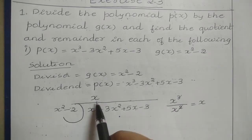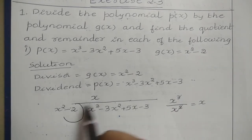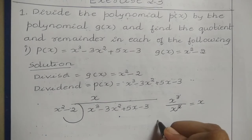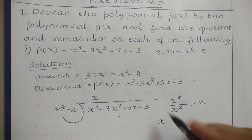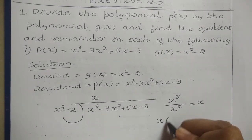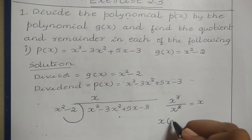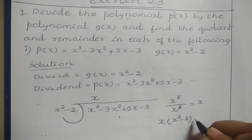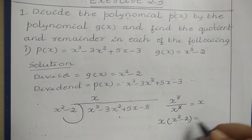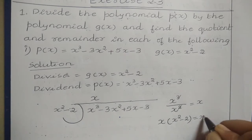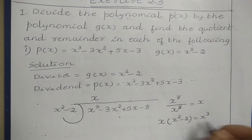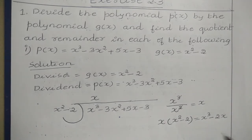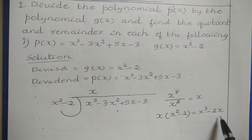After getting the first term of the quotient, multiply this value by the divisor. The first term of the quotient is X, so X multiplied by the divisor X squared minus 2 gives: X times X squared equals X cubed, and X times minus 2 equals minus 2X. So we get X cubed minus 2X.